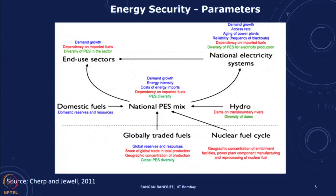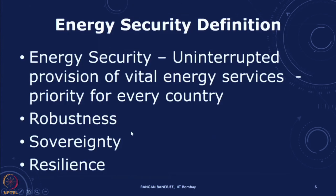When we talk of energy security, the parameters we could look at include security in terms of the end use sectors — the different kinds of demands that we have, the national electricity system. We can also look at the mix of national energy use: domestic fuels, imported fuels, hydro, the nuclear fuel cycle, and globally traded fuels. A simple definition of energy security is that we would like to have uninterrupted provision of vital energy services. This is a priority for every country — we need to make sure that whatever energy we need for all our activities, we have access to it with no interruption.